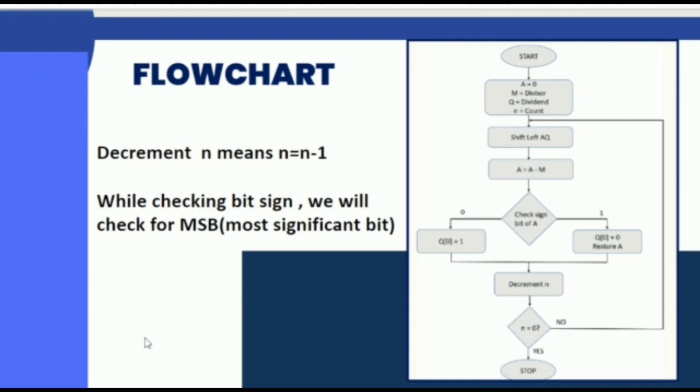Coming to the flowchart, we have to initialize the declared variables. Then there are some steps we have to execute like shift left AQ, A equals A minus M, checking the sign of A and decrementing N by 1, and checking if N is equal to zero or not.